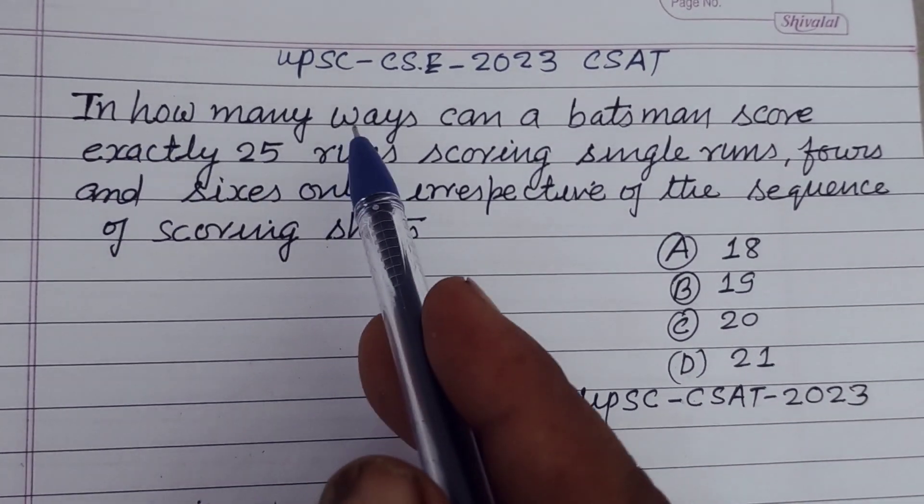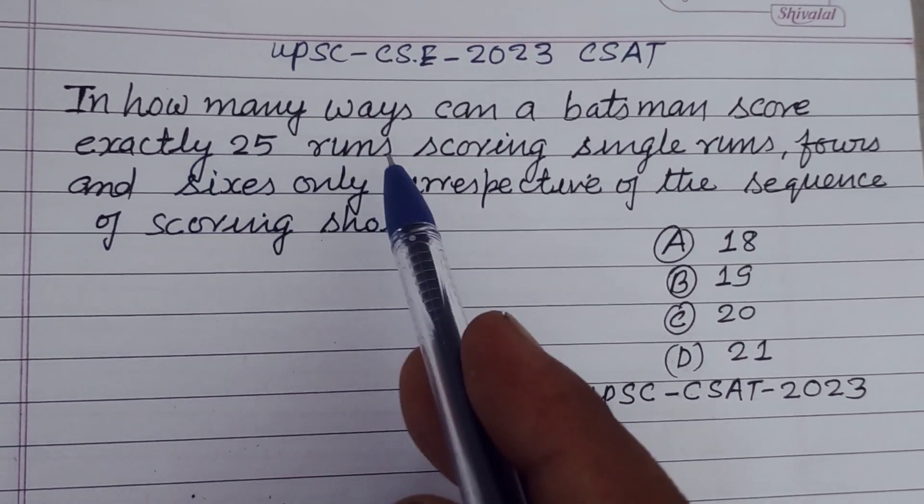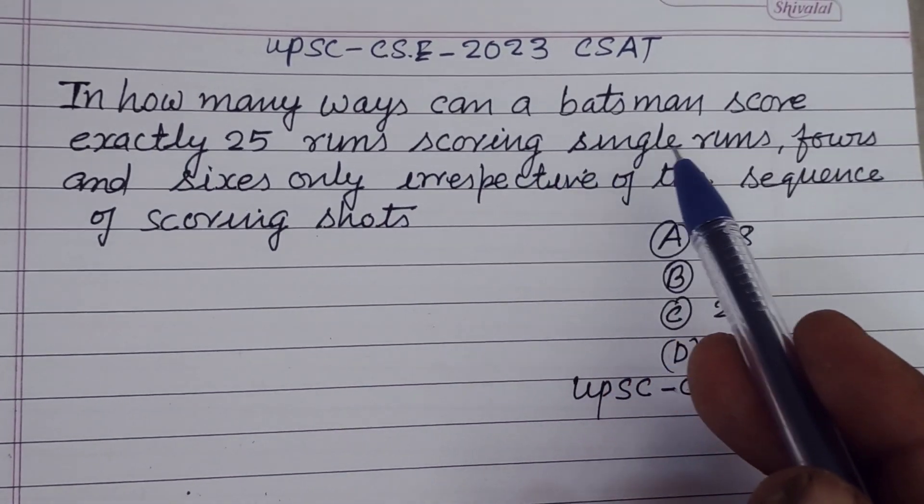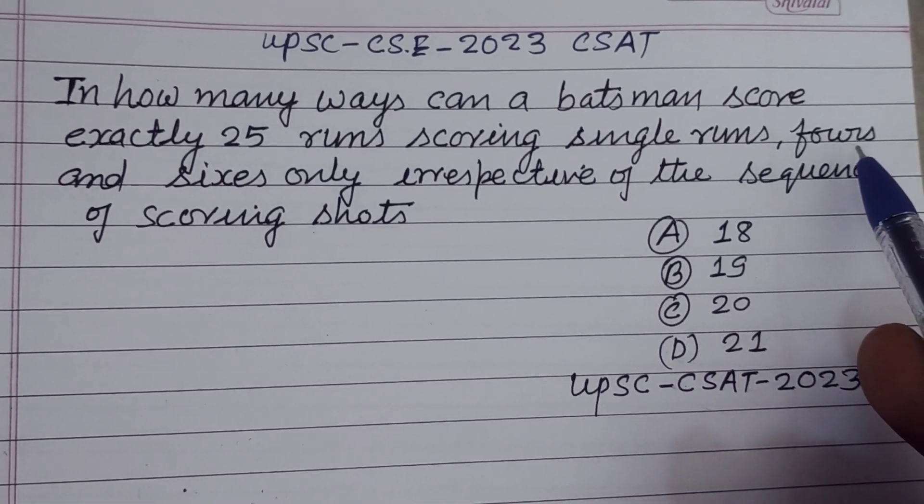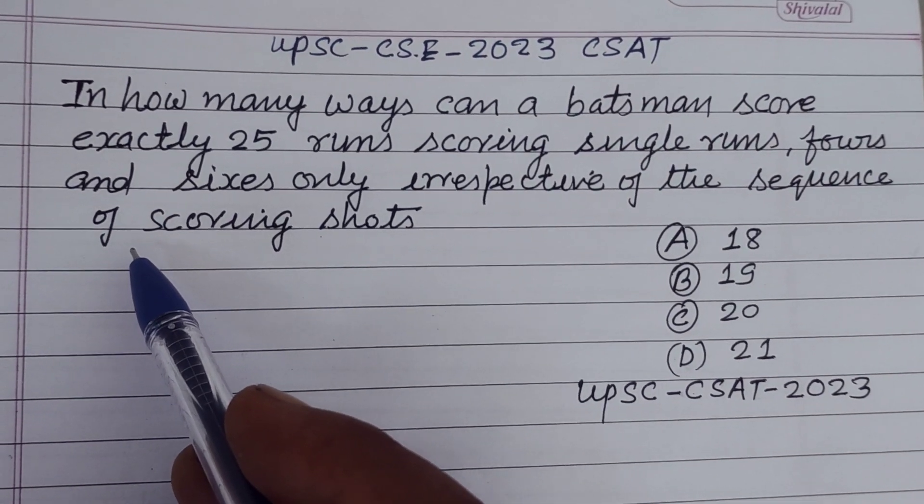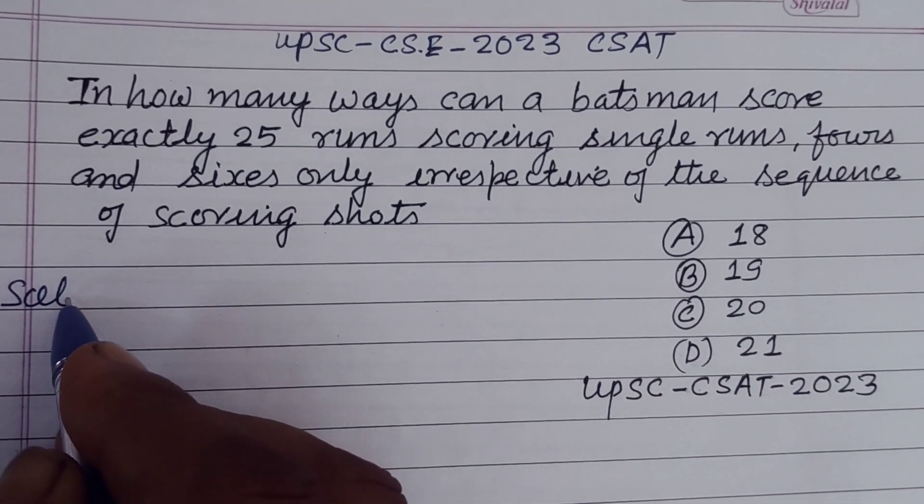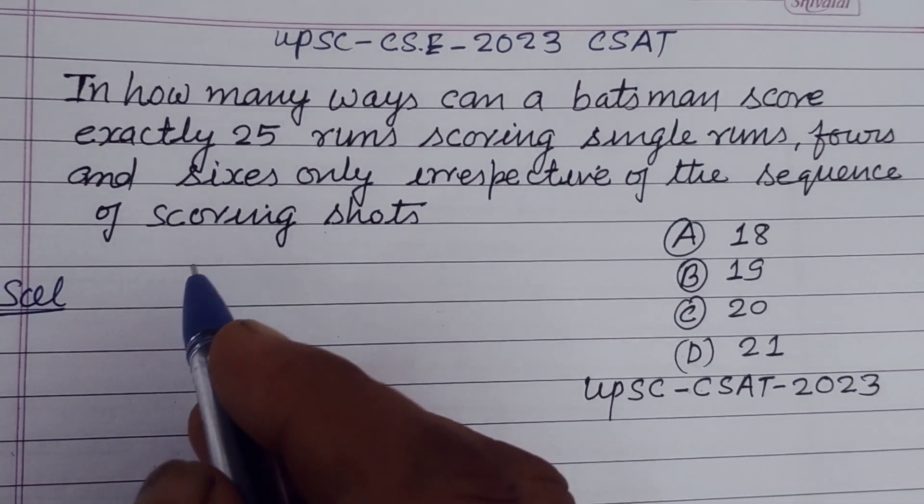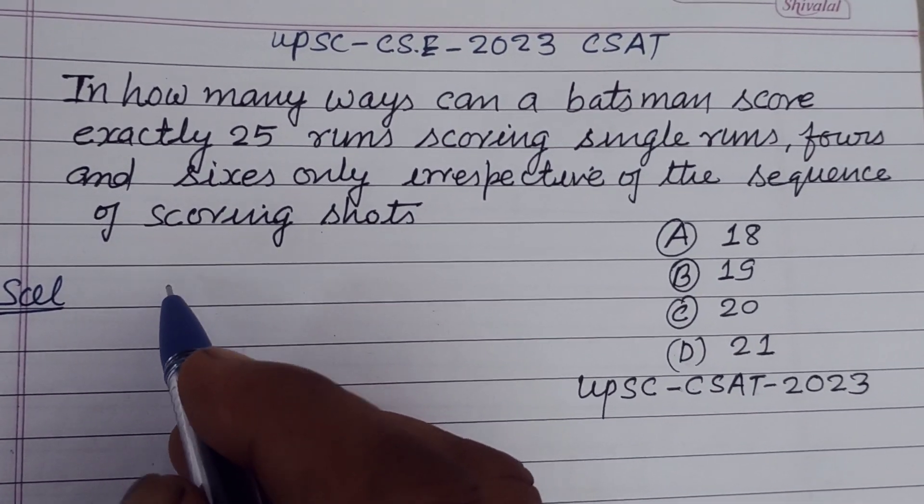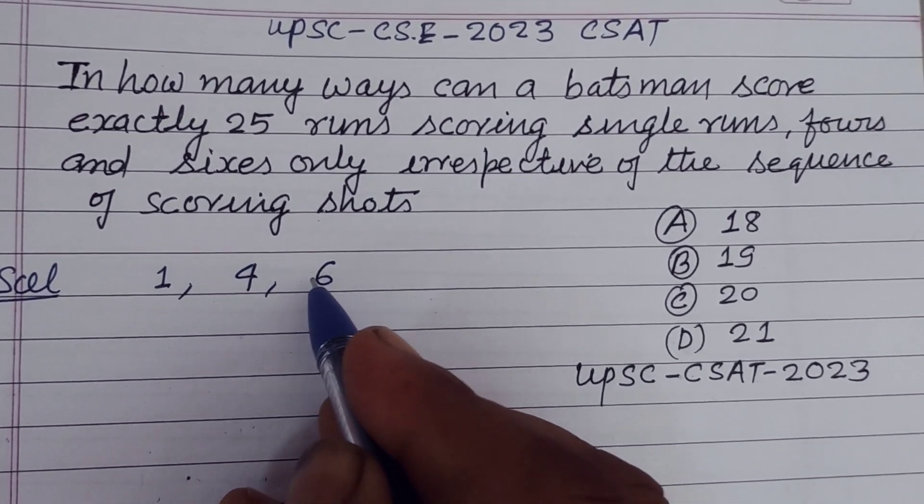In how many ways can a batsman score exactly 25 runs, scoring single runs, 4 runs and 6 only, irrespective of the sequence of scoring shots. So student, here batsman making 25 runs by taking single, 4 and 6.